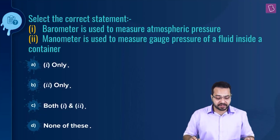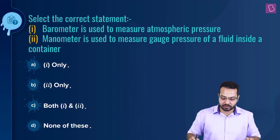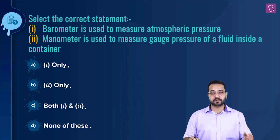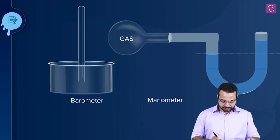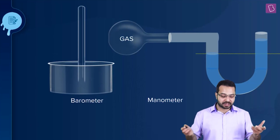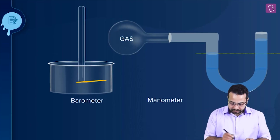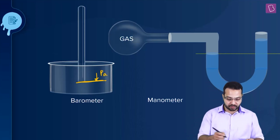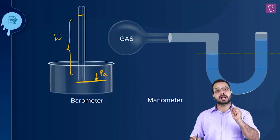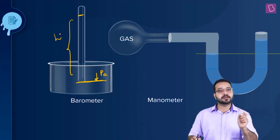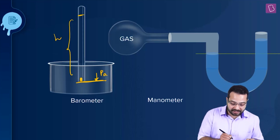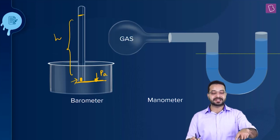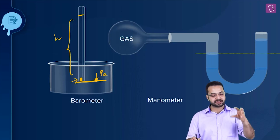Select the correct statement. Statement 1: barometer is used to measure atmospheric pressure. Statement 2: manometer is used to measure gauge pressure of a fluid inside a container. We need to figure out which are correct. Barometer is used to measure atmospheric pressure. The pressure at the surface equals atmospheric pressure, and there will be a certain height of mercury column. For a static fluid, the pressure at the same level in the same liquid is the same — so atmospheric pressure equals the pressure due to the mercury column height. That's how a barometer works.